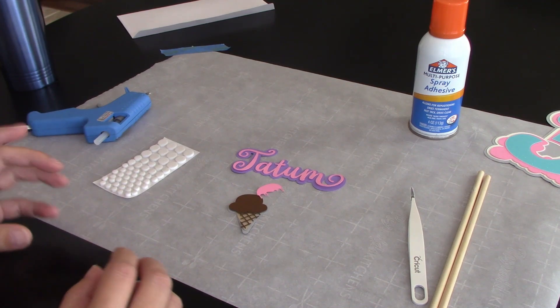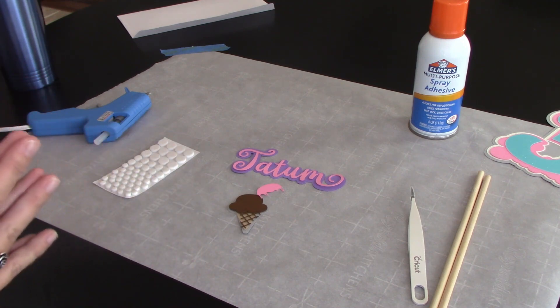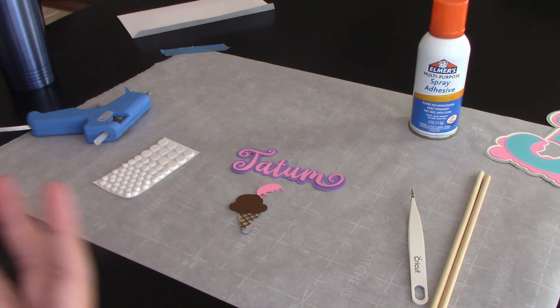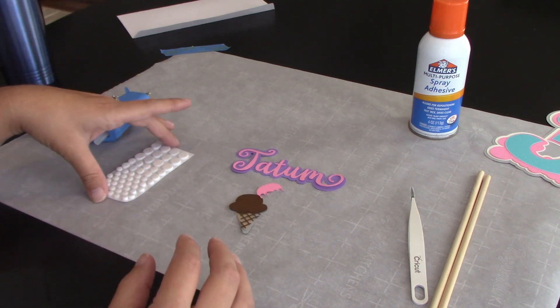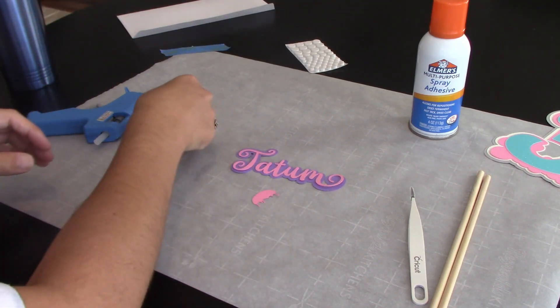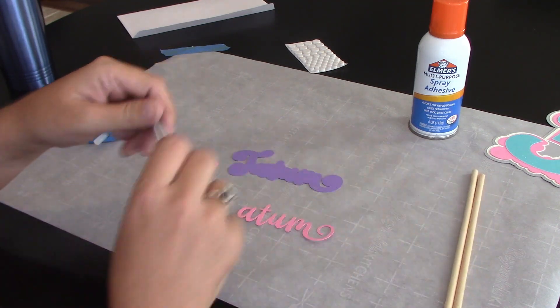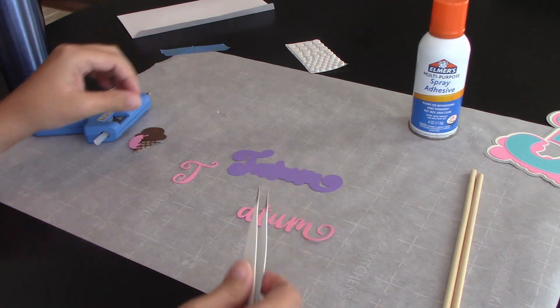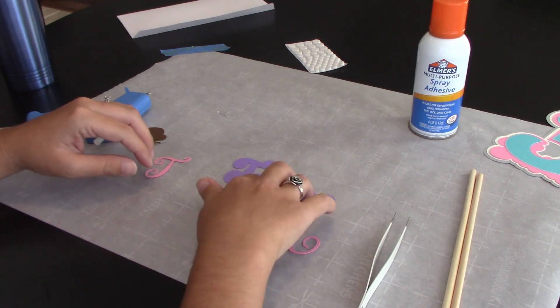Anything that you don't want the three-dimensional look on, you need to glue together. And that's going to be your small little parts like the name, the decoration, whether you've got an ice cream cone, you've got a unicorn, trolls, dinosaurs, whatever you've got going. You'll want to glue those together. So I'm going to put my ice cream cone aside for now. And this is where your tweezers come in. You need them to help you place the items because this can get a little sticky.